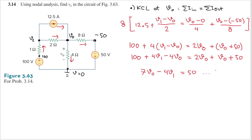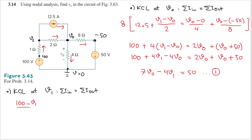Now let's do KCL at v1. KCL says the sum of currents in equals the sum of currents out. The only current going in is (100 minus v1) divided by the resistance between them. The currents going out are (v1 minus v0) divided by 2, and 12.5.